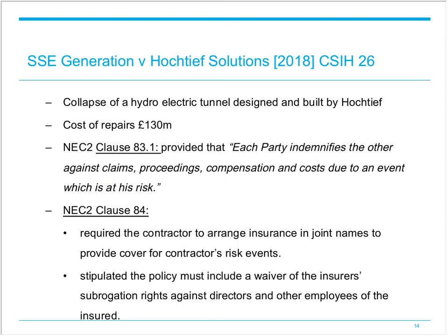Moving to the case study section — there have been several high-profile cases in recent years in which insurance provisions of construction contracts have been placed under the spotlight. One well-known recent Scottish case is SSE Generation Limited against Hocketeeth Solutions, commonly referred to as the Glen Doe case, since it involved the collapse of a tunnel at a hydroelectric plant at Glen Doe in the north of Scotland. The cost of repairs came to over £130 million.